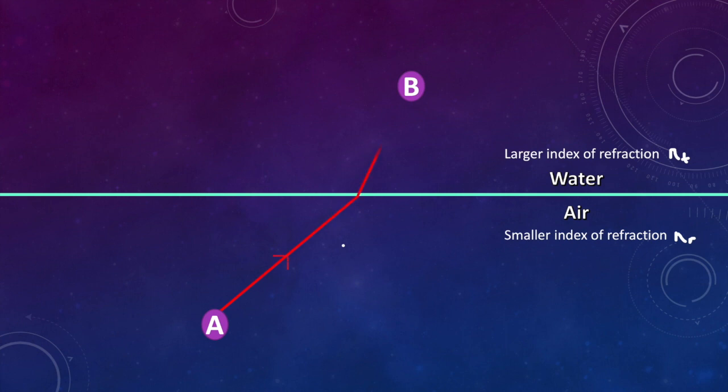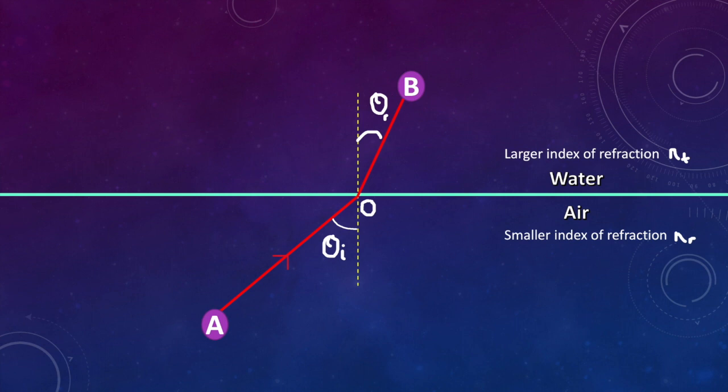Light behaves in the exact same way when it travels in two different media — for example, from a medium of lower to a medium of higher refractive index. Time for doing some maths to investigate this behaviour and its consequences. We have a light ray going from air into water, from point A to B. As you can see, we have a path which is very similar to path two in our analogy, where as the light ray passes from a lower to higher refractive index, it bends towards the normal. So the angle of incidence is greater than the angle of refraction. We know from Fermat's principle that light follows the path of least time. Our aim here is to consider the distance from A to B and also the speed of light in two media to optimise our path for time.